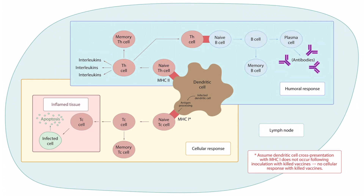Now let's discuss cellular immunity. The dendritic cell will present antigens to the naive cytotoxic T cell using MHC class 1. Once we get this activated cytotoxic T cell, it will form a memory cytotoxic T cell, which will make the cellular response to the same pathogen much quicker in the future.